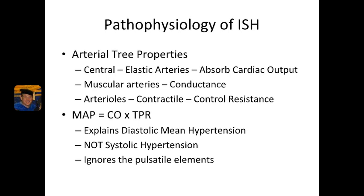Next, we have the muscular arteries. These are also very large arteries, but not as large as the central, and their job is primarily to convey the blood from the central through to the arteries. These are going to be things like the femoral arteries, the popliteal arteries, the radial arteries. And then finally, we have the arterioles, which are the smallest arteries. These are contractile in nature and their job is to control resistance to blood flow. Almost all of the total peripheral resistance comes from the arterioles.